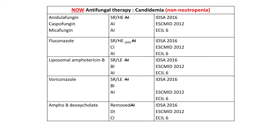These updated guidelines compare ESMID, ESIL, and IDSA for candidemia — in particular for non-neutropenic patients. First line is recommended to be echinocandins. Fluconazole has been put at a C1 grade, and for IDSA now, there are more complicated grades of recommendation where SR is a strong recommendation with high-quality evidence. By 2016, IDSA has now recommended that amphotericin B-deoxycholate not be used — advised against by both IDSA and ESMID.